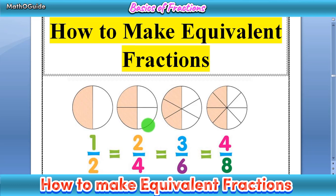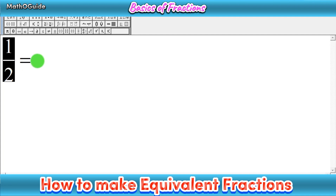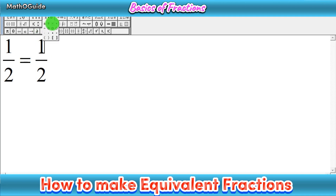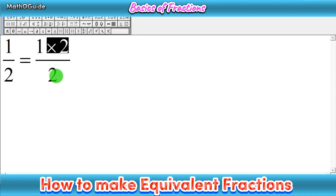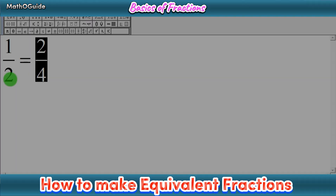Now, how to make an equivalent fraction. First, write the given fraction. For example, if the question asks to write equivalent fractions of 1 over 2, you write 1 over 2, then an equal sign, then write the same fraction 1 over 2 again, and multiply both numerator and denominator by the next natural number, which is 2. So 1 times 2 is 2, and 2 times 2 is 4 — giving us 2 over 4 as our first equivalent fraction.